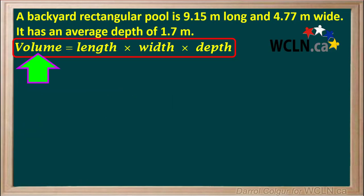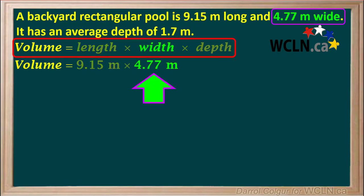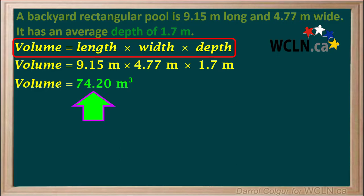We'll start by calculating the volume of the pool in cubic meters. The formula for volume of water in the pool is length times width times the depth of the water. The length is 9.15 meters, the width is 4.77 meters, and the depth of the water in our pool is 1.7 meters. 9.15 meters times 4.77 meters times 1.7 meters is equal to 74.20 meters cubed.